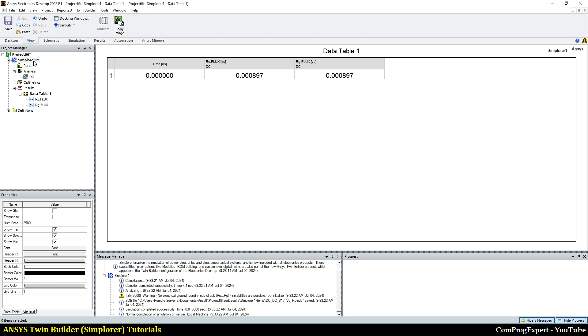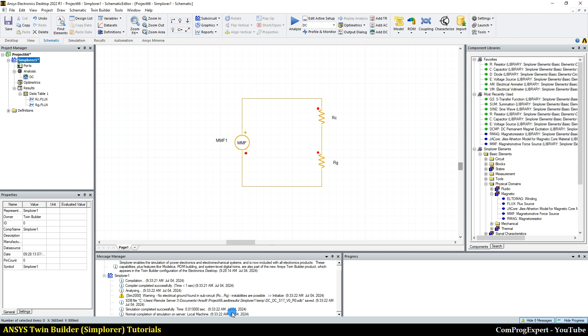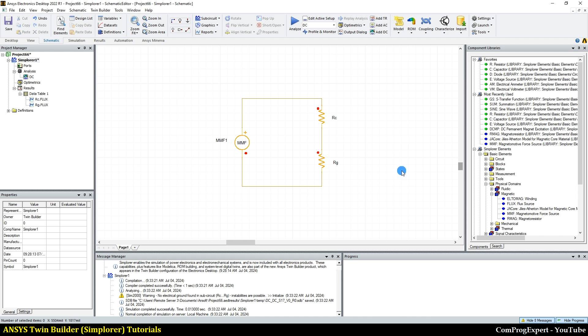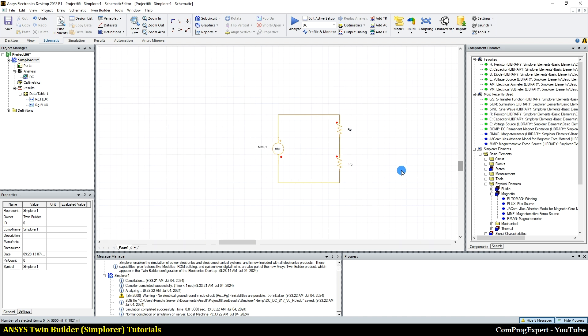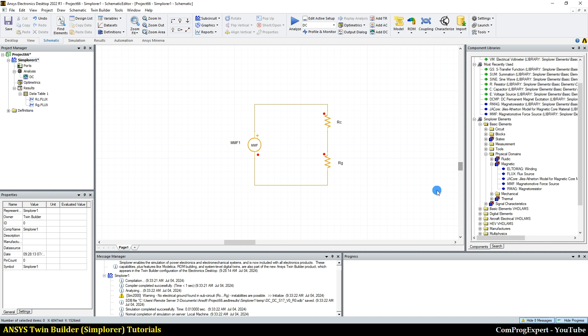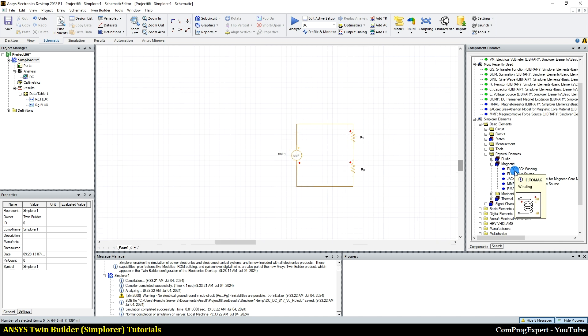So yes, we solved this example using the elements that we have in Simplorer software. So this is a powerful feature of this software, where we have different physical domains. And we can use these domains simultaneously and solve a multi-physics problem.